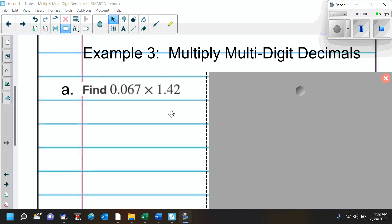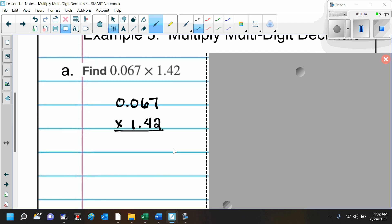When I write it vertically, I like to write the longer one on top. So here, we've got 0.067 times 1.42. And remember, you do not have to line up your decimals. Now, you just multiply like normal.